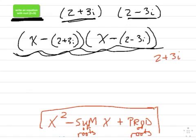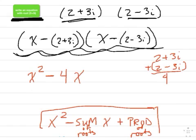What's the sum of 2 plus 3i and 2 minus 3i? What's the sum? If I add those together. It's just 4. So I write x squared minus, because I take the opposite of the sum.